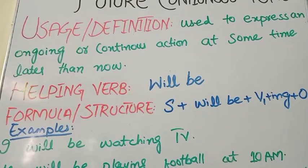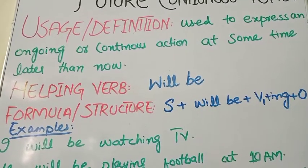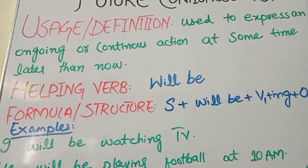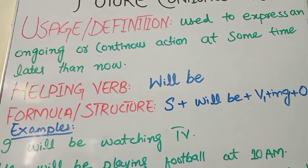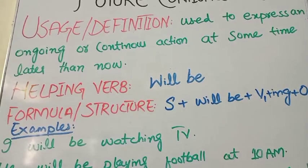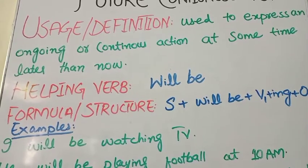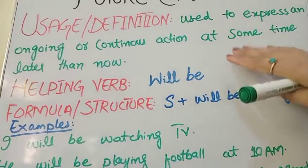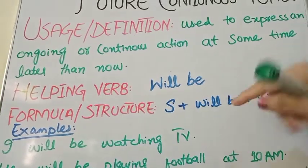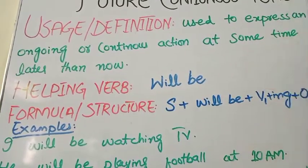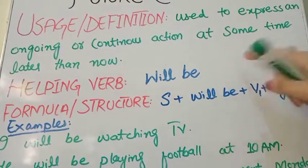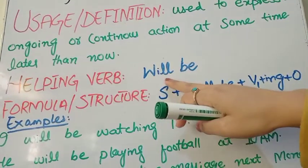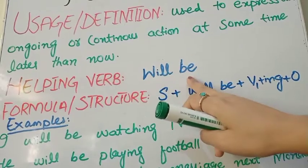Now let's go to the structure — the helping verb — and as usual, negative, interrogative, and positive sentences. So what will be used as the helping verb? Verb 'to be' is used in all continuous tenses. The forms are: is, am, are, was, were, and will be. In future continuous tense, the helping verb used is 'will be.'